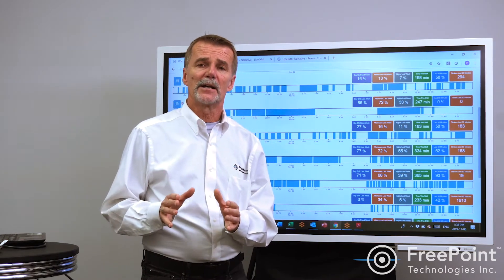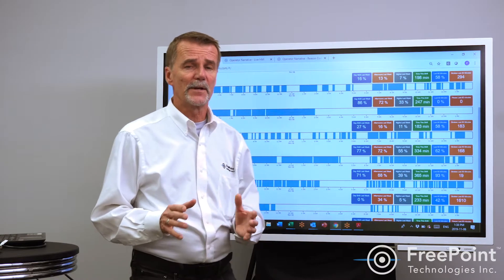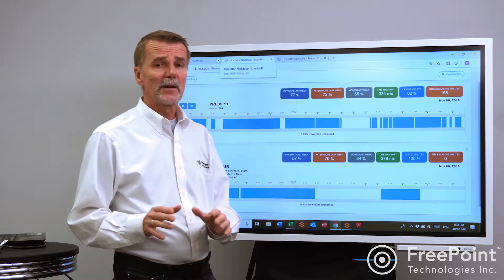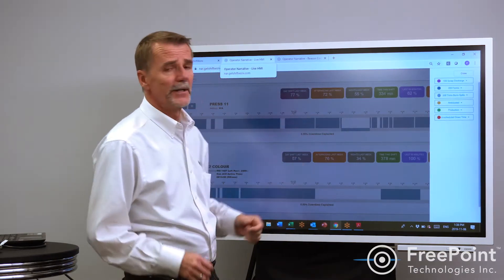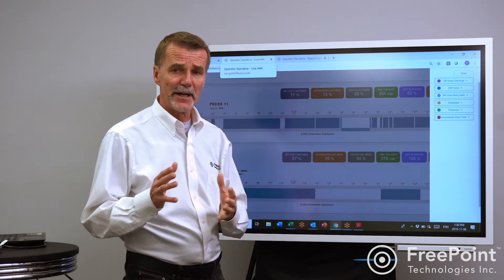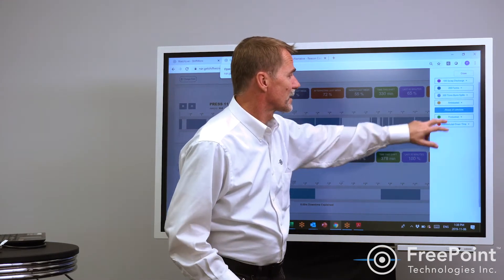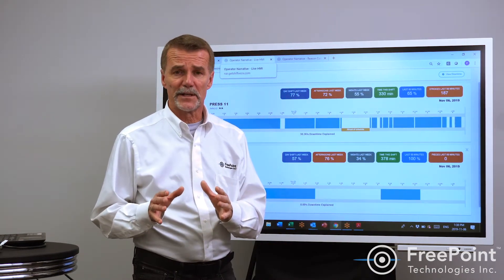So the question is how do you capture and how do you report downtime information? With our system it's very simple. It's a matter of having the operators simply select the period that they want to narrate or record their downtime on and then say why the machine is down.